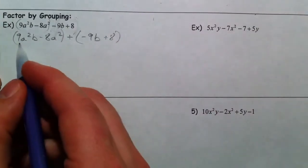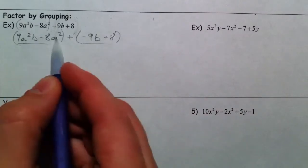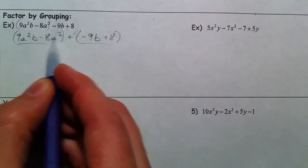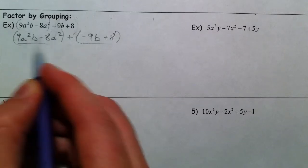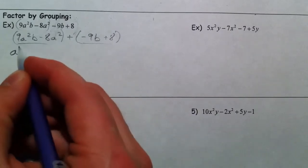Now, we look for what they have in common here and what they have in common here. So both terms here have an a squared. Nothing in common with the numbers 9 and 8. This is 3 and 3, and 2 and 2 and 2, or 2 and 4. So I'm going to pull out the a squared, the basic kind of factoring you did.